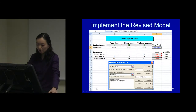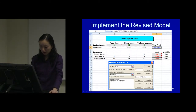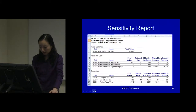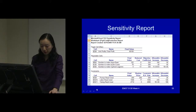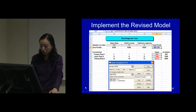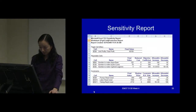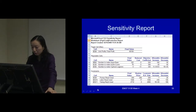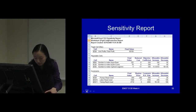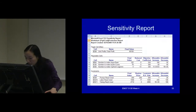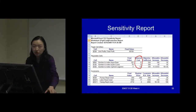In this solver, I implemented it and ran the sensitivity analysis report. This is a new report based on the new model when I implement this third model. And there is one place we're going to look at now — it's called the reduced cost. That's in the first table that we look at.